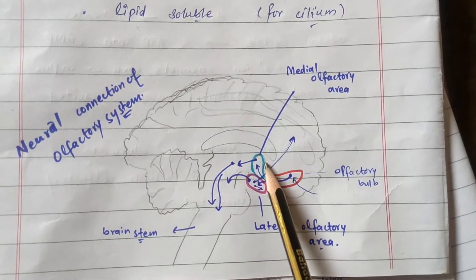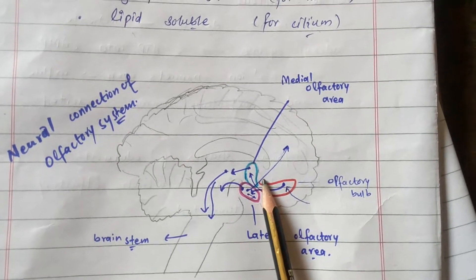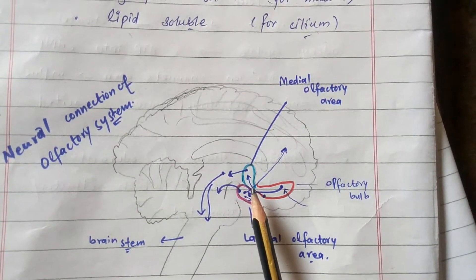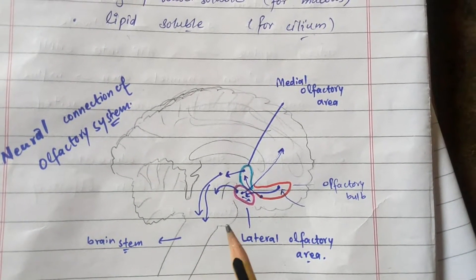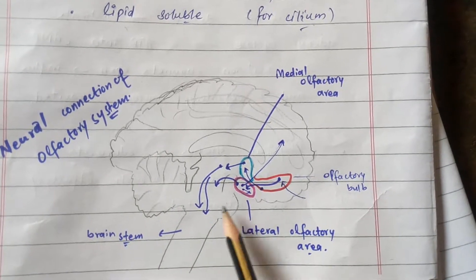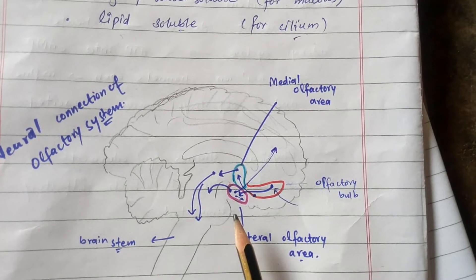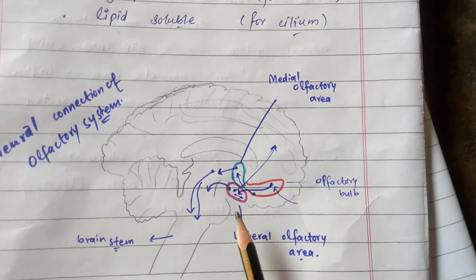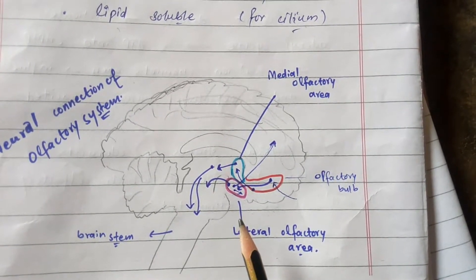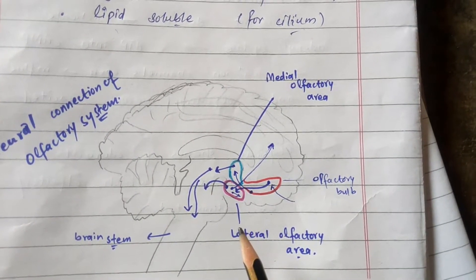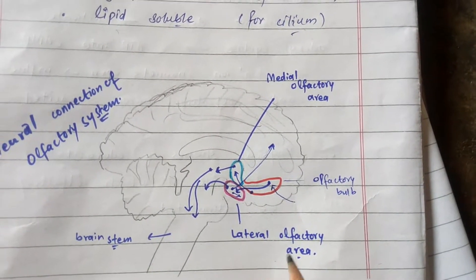The medial olfactory area — consisting of the olfactory nucleus, olfactory tubercle, and parts of the hypothalamus — affects more primitive responses such as licking the lips and other feeding responses caused by the smell of food. The lateral olfactory area includes the prepiriform and piriform cortex and part of the amygdaloid nuclei. This is the area which causes a person to develop an absolute aversion to foods that have caused nausea and vomiting.